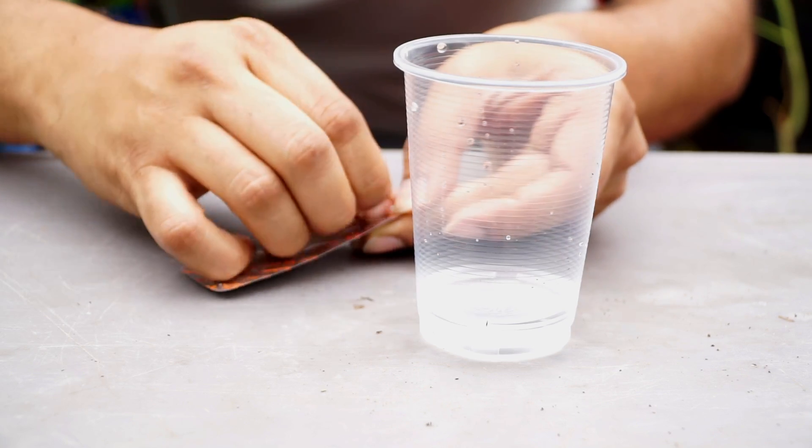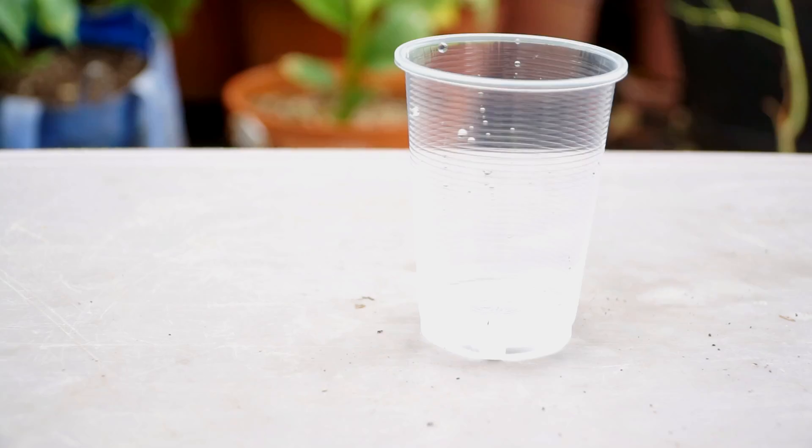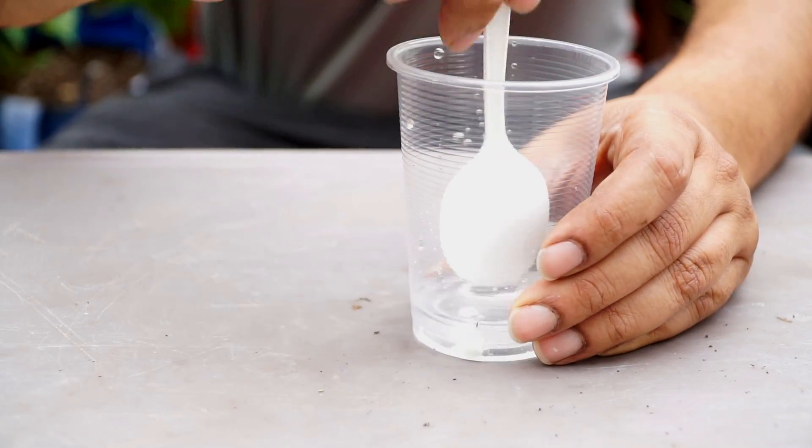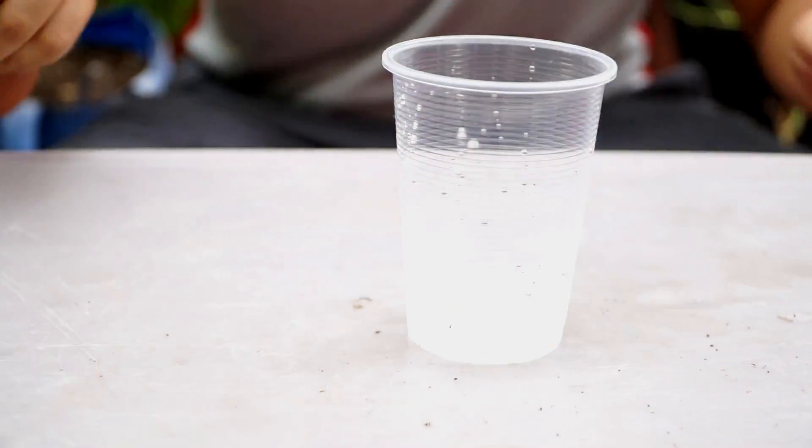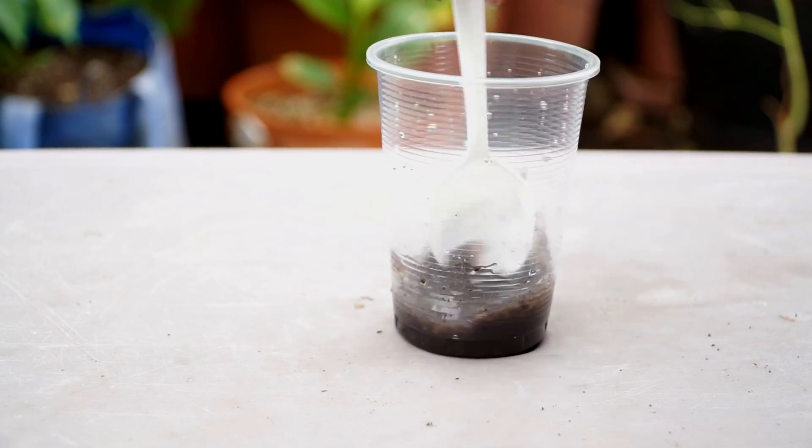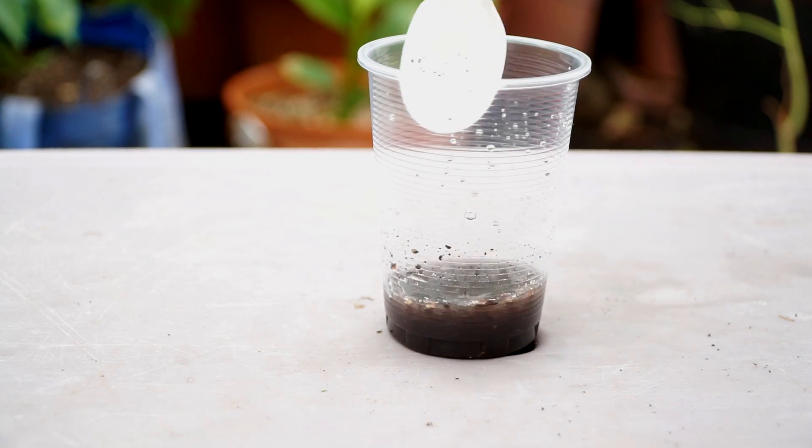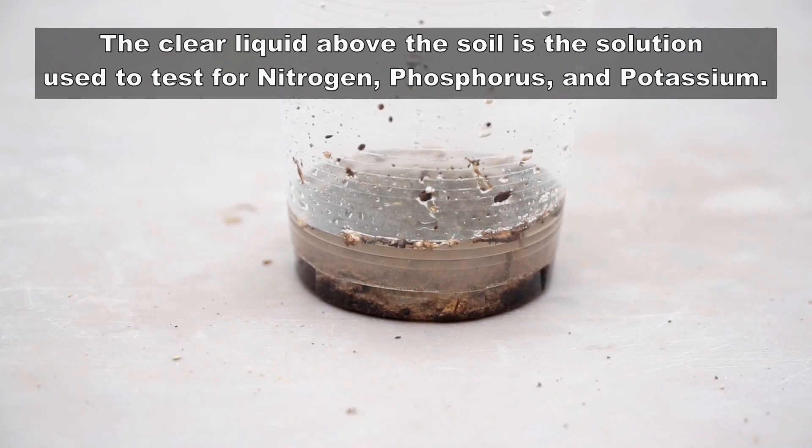The flock X tablets let the soil settle down towards the bottom of the cup so that you can use the clear solution that's on the top to do all the tests. So once you dissolve the two tablets and the soil settles down, you will be using this solution for the rest of your nitrogen, phosphorus, and potassium tests.